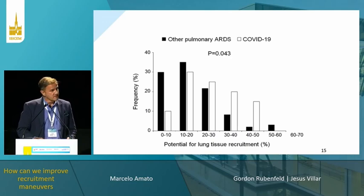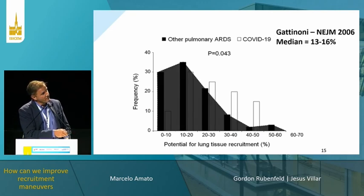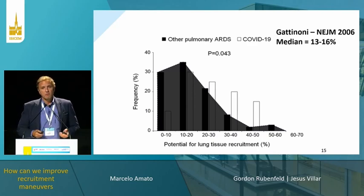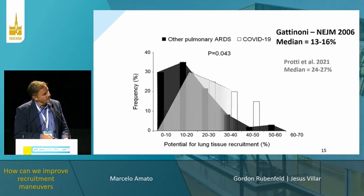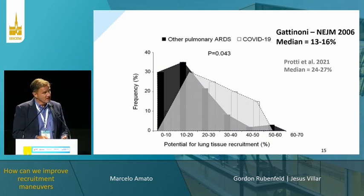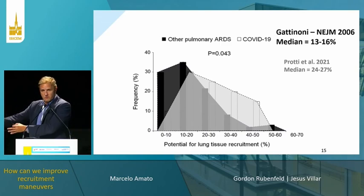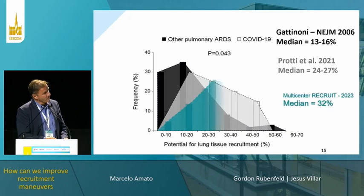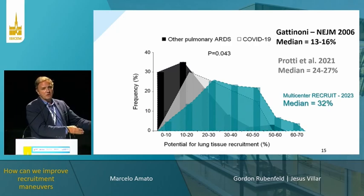Comparing with previous studies: Gattinoni's famous New England Journal study showed the median recruitability is 13%, meaning only about one-tenth of parenchyma can be recruited — making it very questionable whether it's worth it. Protti's study using the same technique found a more optimistic value of 25%, with some patients reaching 50%. For COVID patients, we found an even higher value of 32% — one-third of the lung was not working and, after the maneuver, was working. A much more optimistic result.